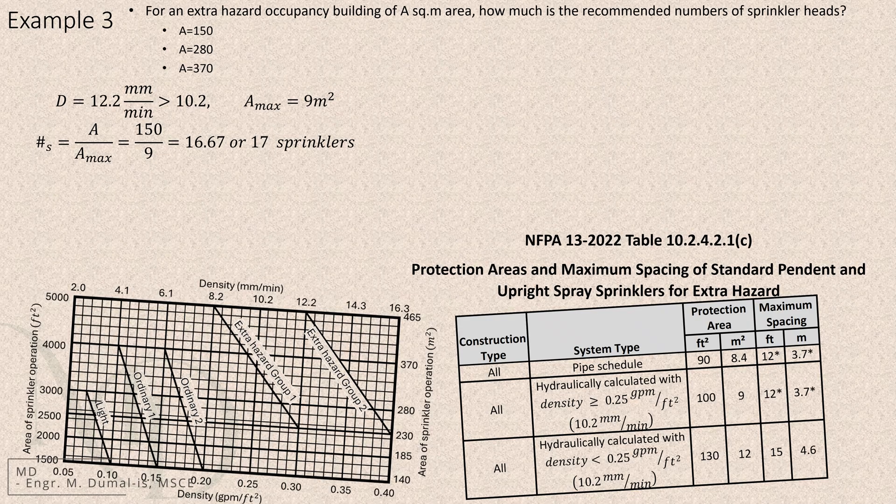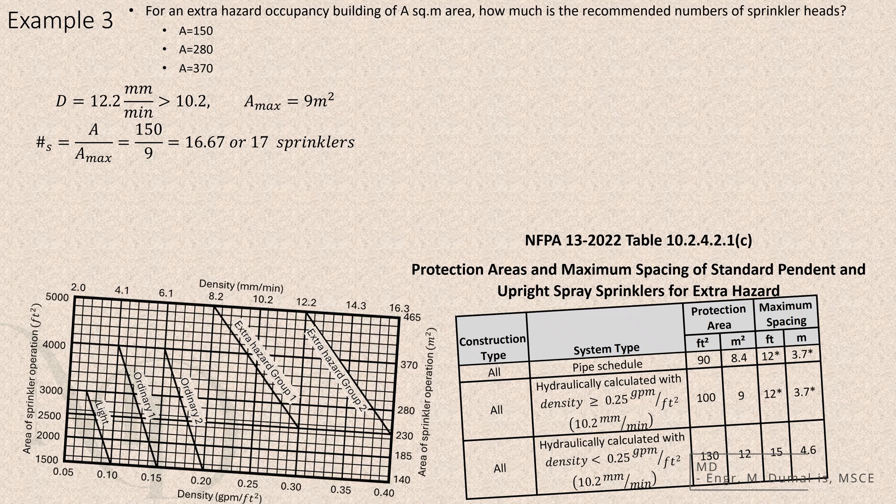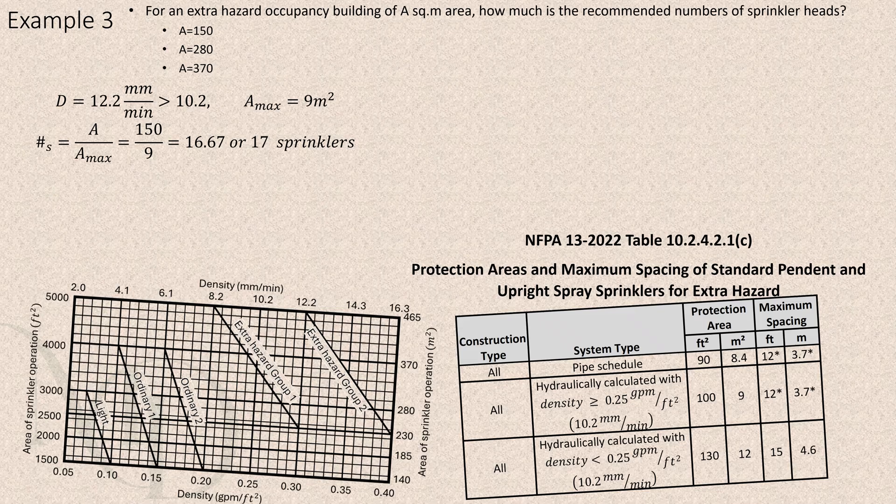Using table 10.2.4.2.1c, the maximum area per sprinkler for that density is 9 square meters. Dividing 150 by 9 gives 16.667, so we rounded up to 17 sprinklers.